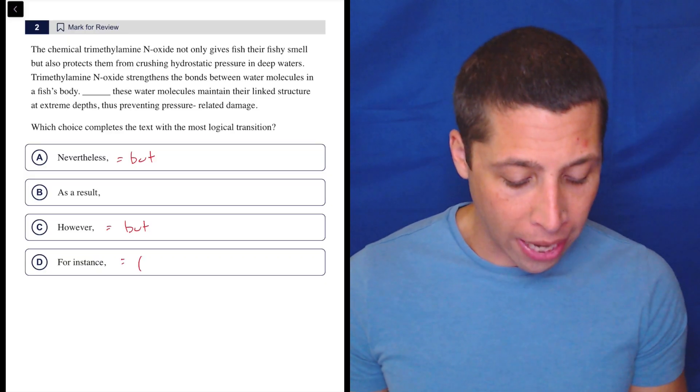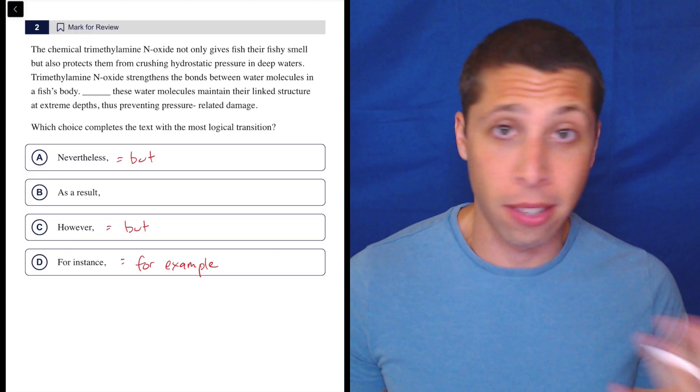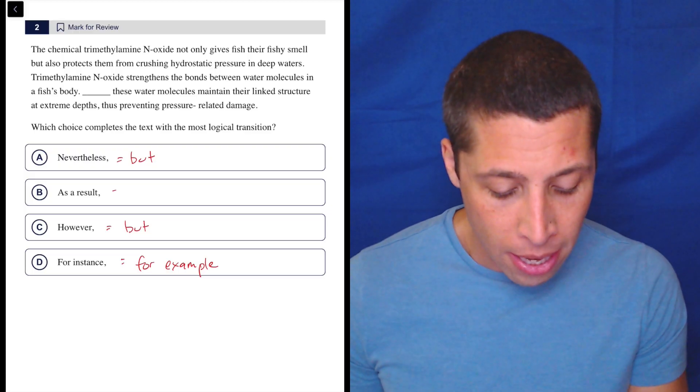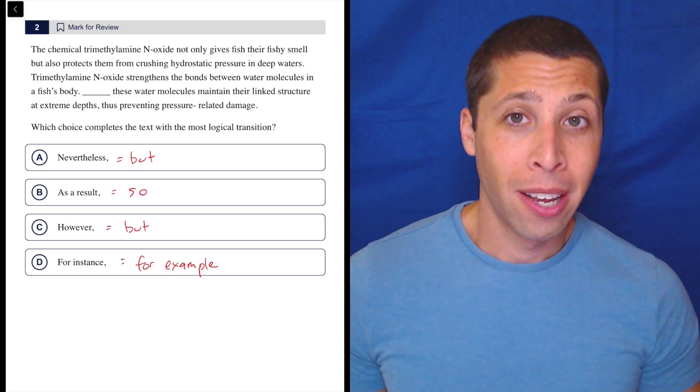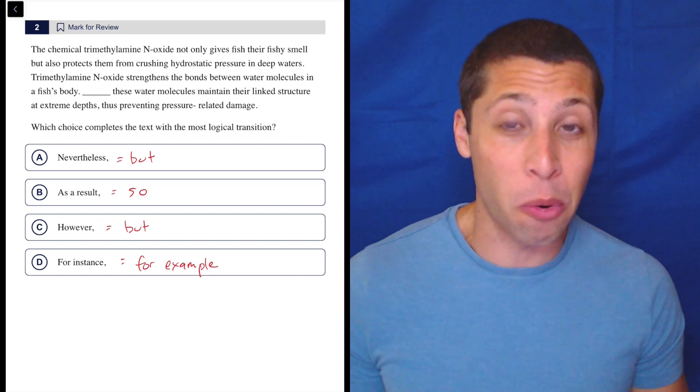We should also be able to categorize these others into simpler, dumb summary versions. So for instance, as for example, that might be fairly obvious. And as a result is so. Now, as a result, it's not particularly complicated, but I do think it's better to think of it as so because that's just a little bit more intuitive.